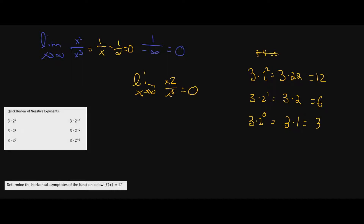If you want to know why anything raised to zero is one, look at the pattern: two squared means two copies. Going down to two to the first, I divide away one two. Going from two to the first down to two to the zero, I divide out another two — that's why it becomes one.